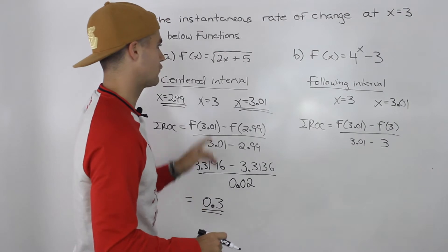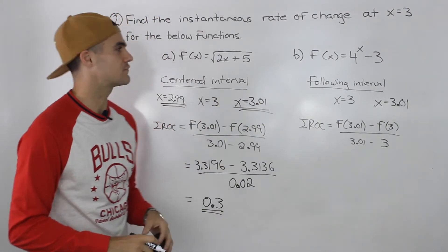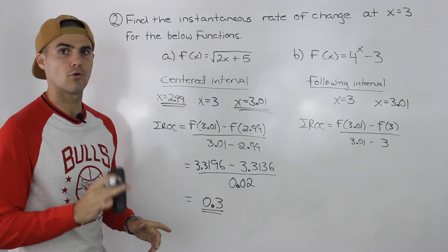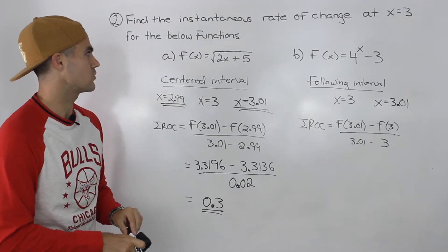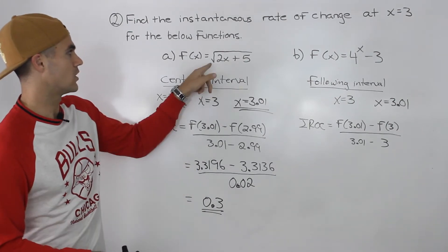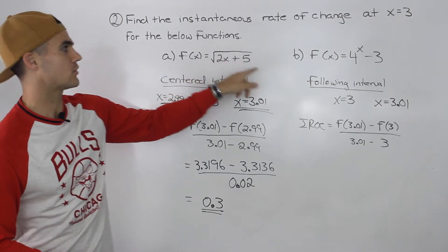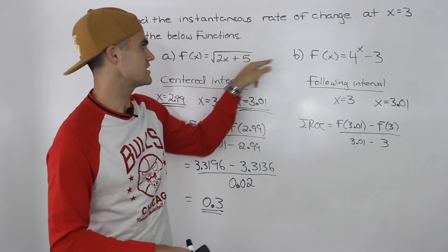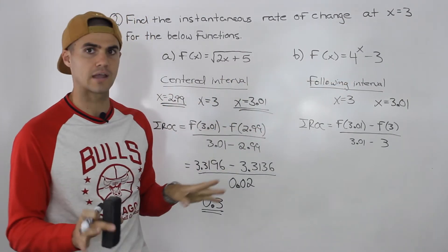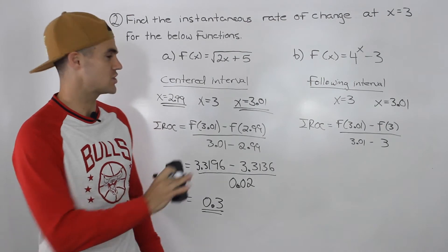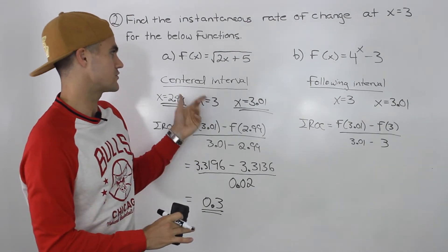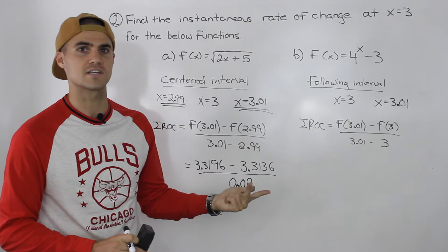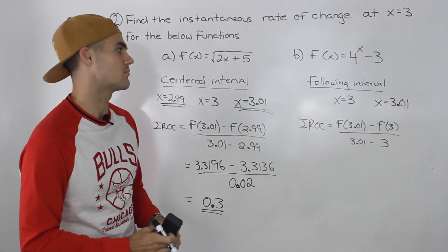Notice how for none of these have we used the difference quotient, because we haven't really gone over how to use the difference quotient with functions that have a radical or exponential function. So whenever you receive functions like this, usually to find the instantaneous rate of change you'll have to use either the centered interval, following interval, or preceding interval methods.